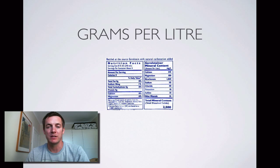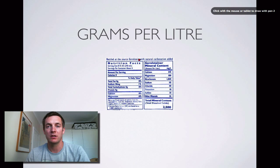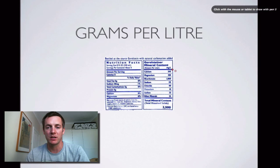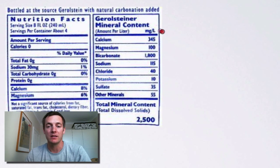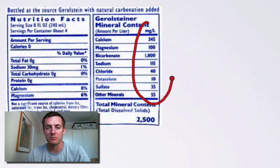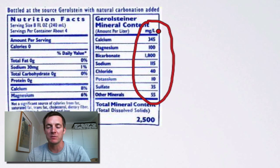Moving on to grams per liter — this is a much more commonly seen unit. This particular label is off a Gerolsteiner bottle, a mineral water that sponsors a cycling team you might have seen in the Tour de France. Here we've got the concentration of various minerals given not in grams per liter but in milligrams per liter.